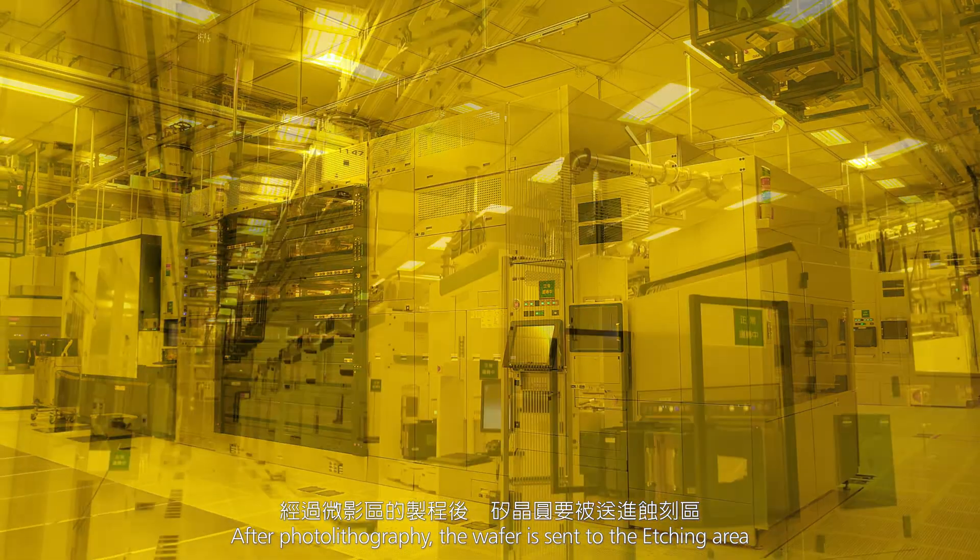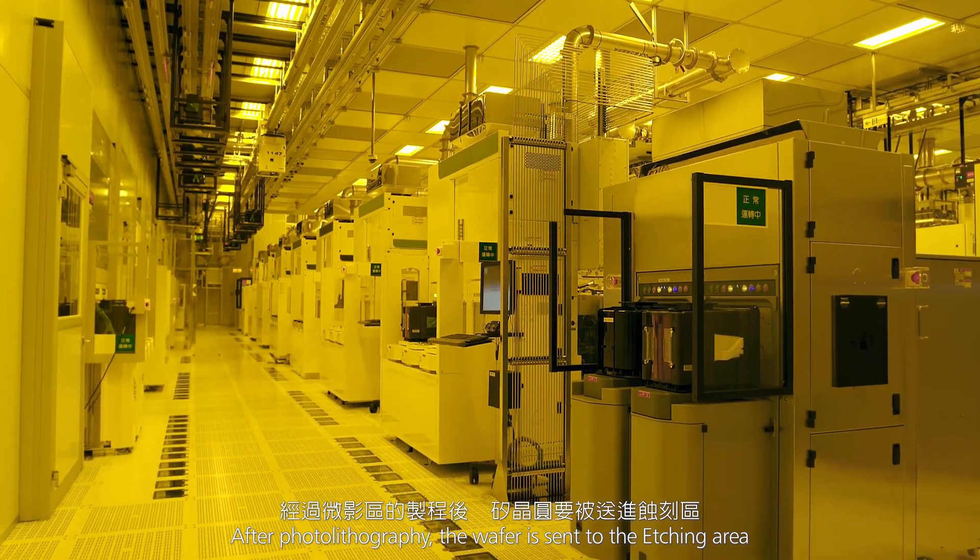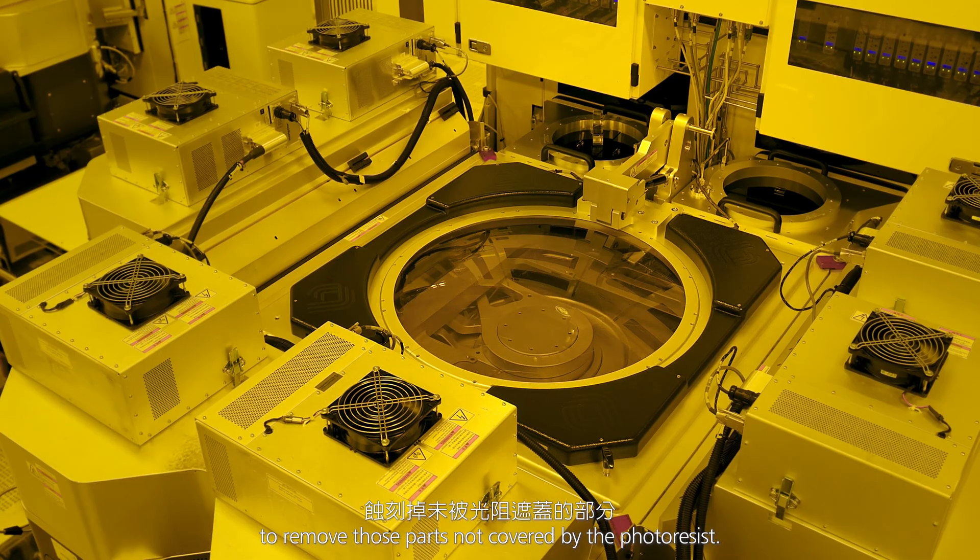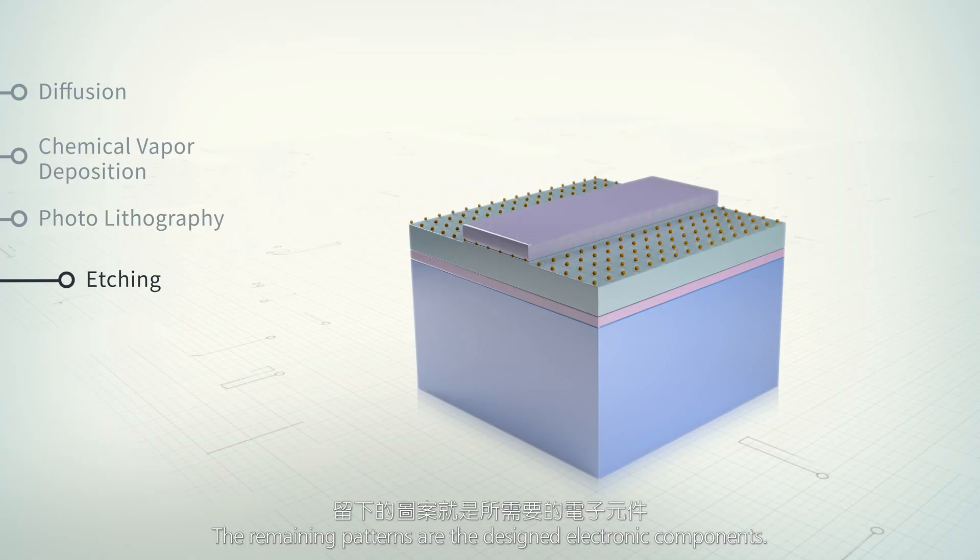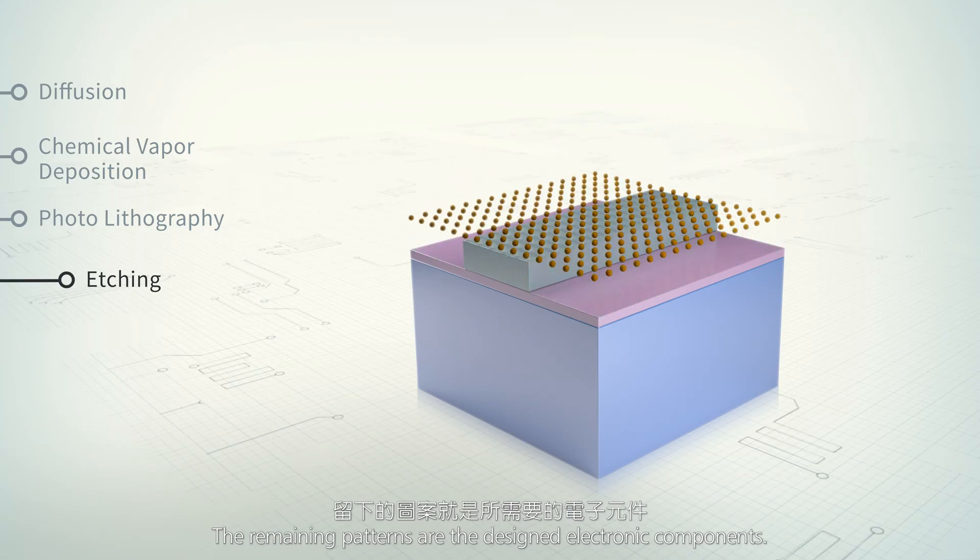After photolithography, the wafer is sent to the etching area to remove those parts not covered by the photoresist. The remaining patterns are the designed electronic components.